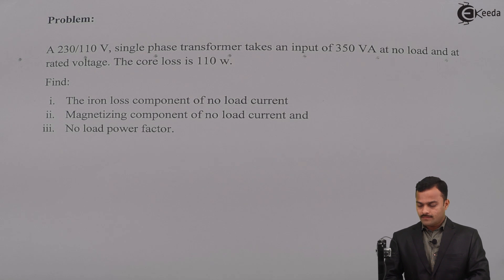The core loss is 110 watt. Find: first, the iron loss component of no load current; second, magnetizing component of no load current; and third, no load power factor. So it is a problem based on no load phasor diagram of a single-phase transformer.